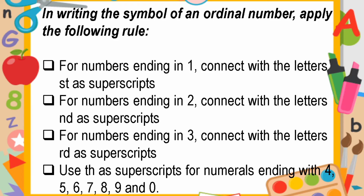In writing symbols of ordinal numbers, apply the following rules. For numbers ending in one, connect with the letters ST as superscript — for example: first, twenty-first, thirty-first, and so on. For numbers ending in two, connect with the letters ND as superscript — for example: second, twenty-second, forty-second, sixty-second.